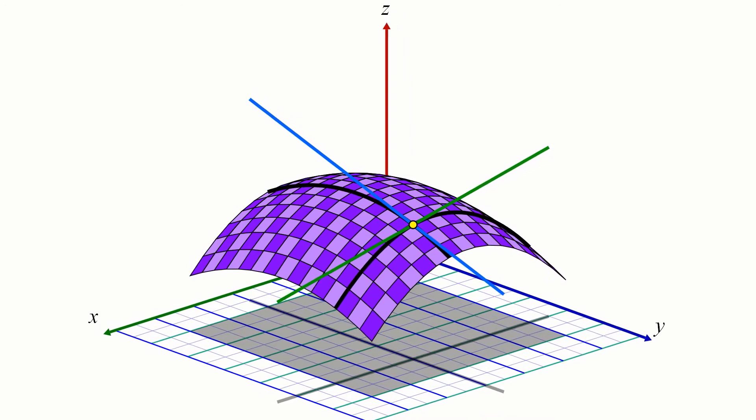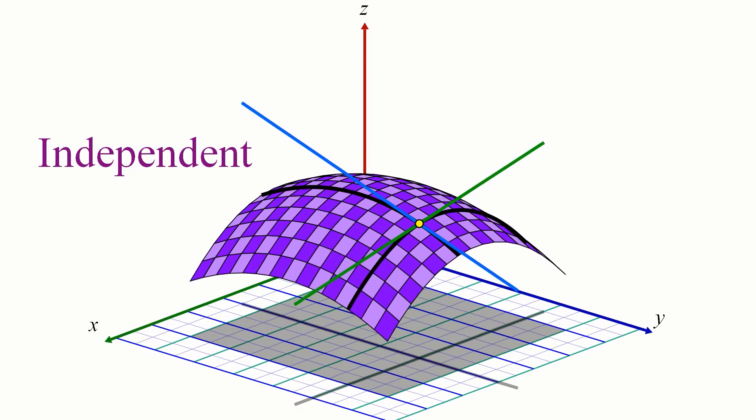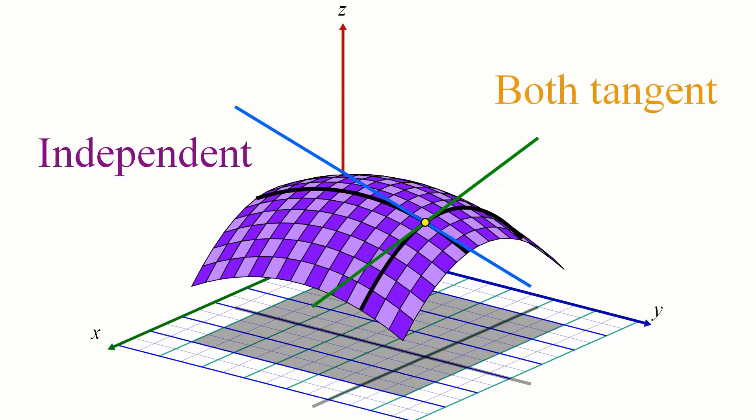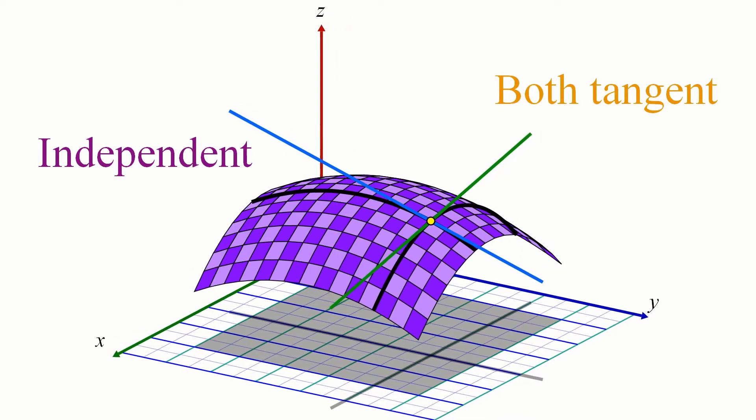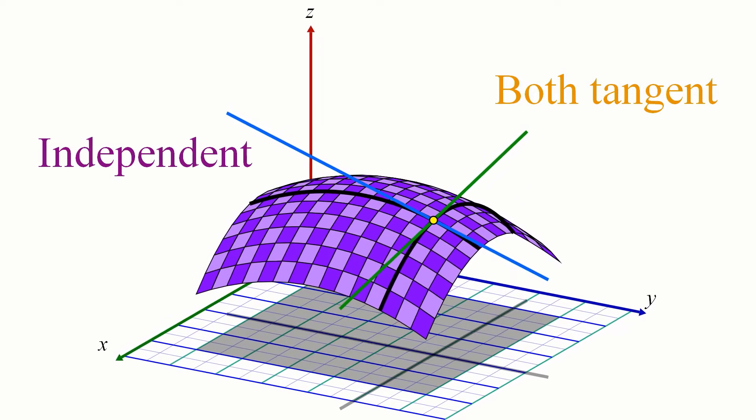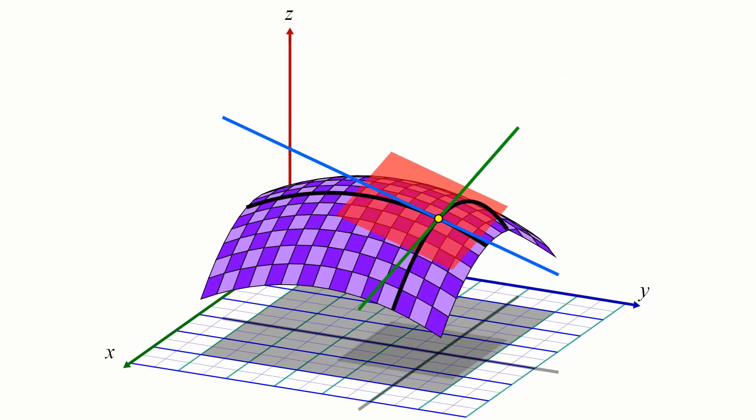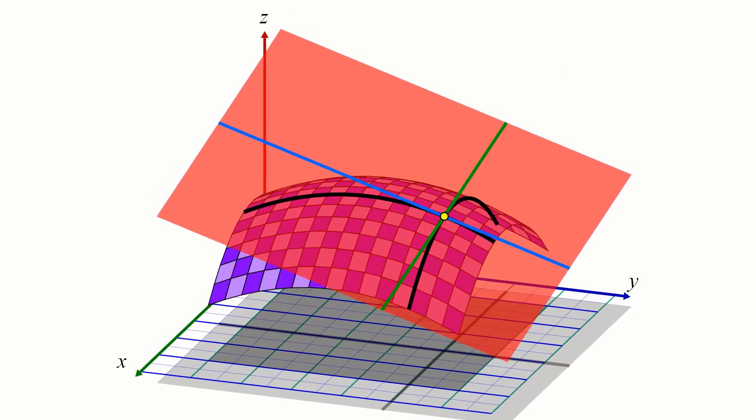First, both tangent lines are independent of each other, meaning they go in different directions and aren't parallel. And second, since they are both tangent to the surface, they must both be contained in whatever the tangent plane is. And just like how two independent points define a line, two independent lines define a plane, and this plane must be the unique tangent plane to the surface at the given point.